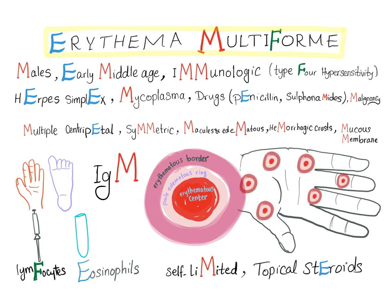Epidemiology: it's more common in males, especially in early middle age, 20 to 40 years of age. The mechanism is an immunologic reaction — most probably a type 4 hypersensitivity reaction. Remember, type 4 involves lymphocytes, which we will discuss later.